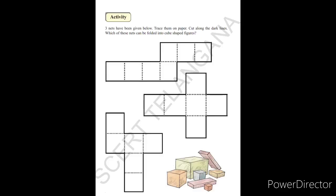Now next page Activity 3. Nets have been given below. Trace them on paper. Cut along the dark lines. Which of these nets can be folded into cube shape figures? Now let us take a paper and try to draw these figures and cut that shapes. After cutting we can try to fold it and see whether we can make a cube or not.